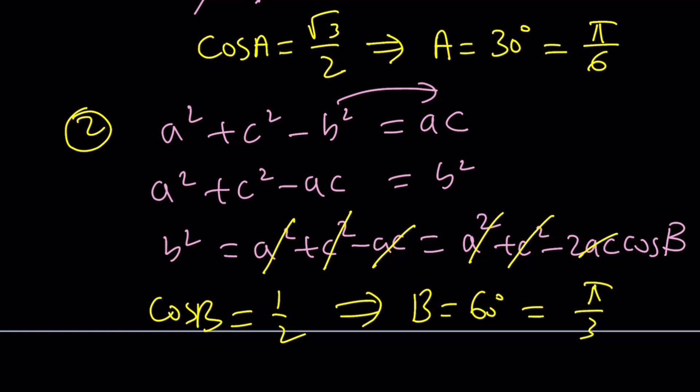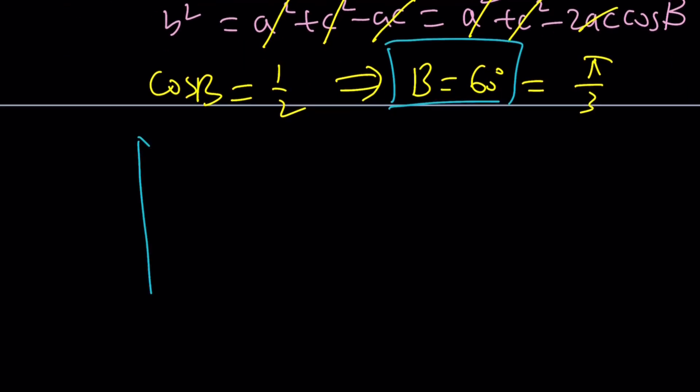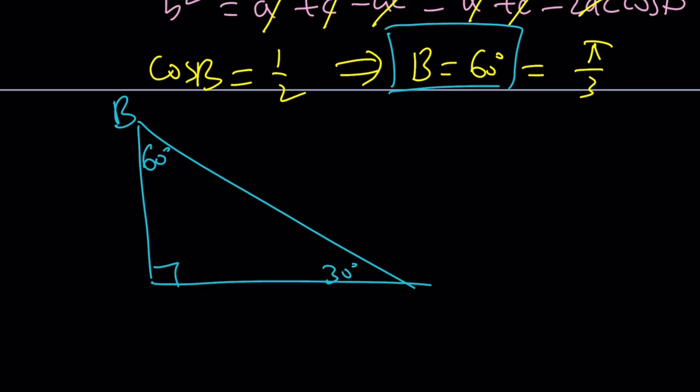We have a triangle. A is 30 degrees, B is 60 degrees. You know what that means? It means we have a 30-60 triangle. And of course, the third angle needs to be 90. B is 60, so this is b. This is a, and this is c.